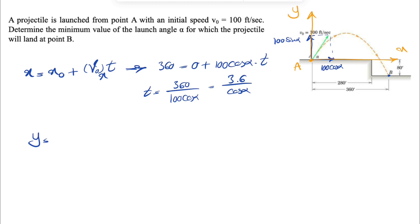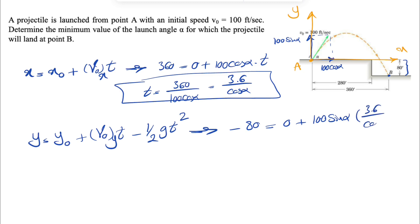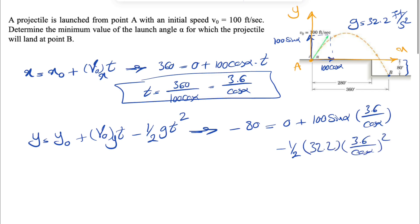For Y motion, we have Y equals Y-zero plus the Y component of velocity minus one-half of gravitational acceleration times T squared. The Y coordinate of point B is negative 80 feet since we move along the negative Y axis. So: minus 80 equals zero plus 100 sine of alpha times T, substituting T as 3.6 over cosine of alpha, and using G equals 32.2 ft/s².